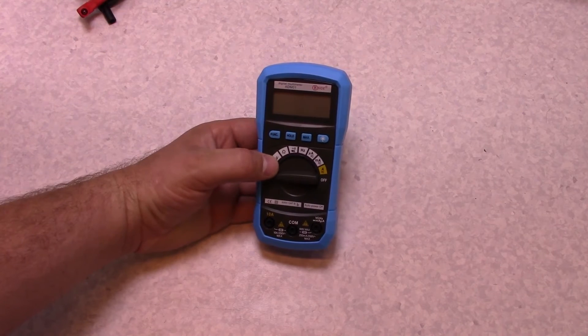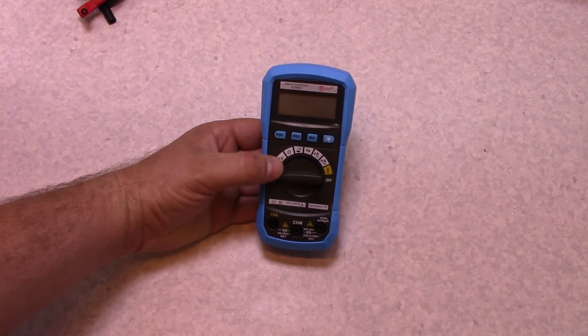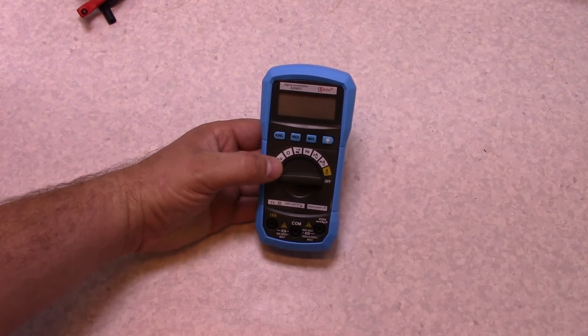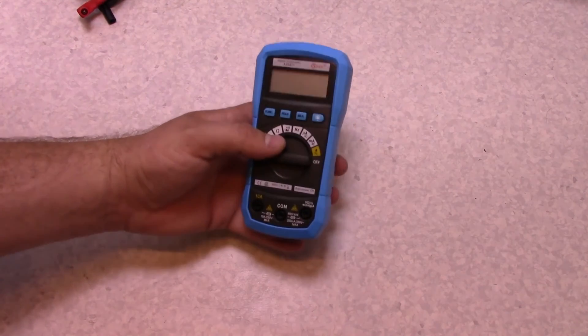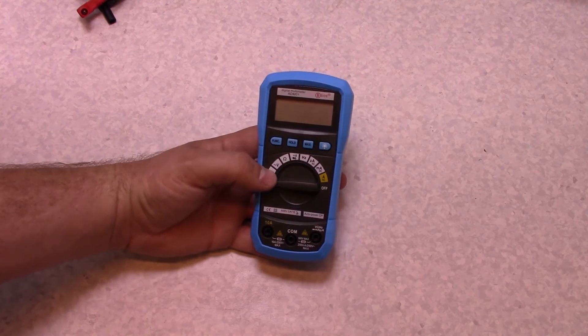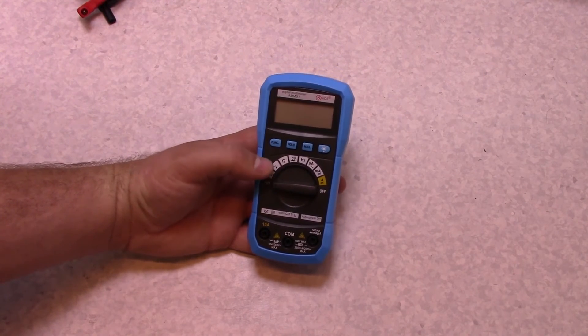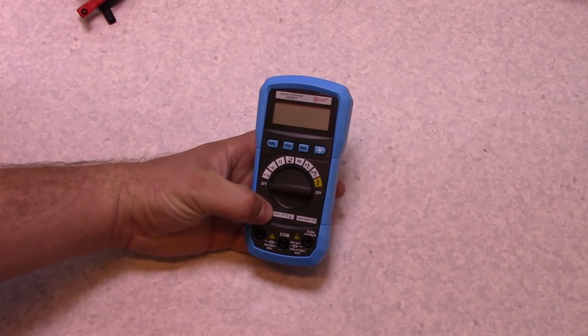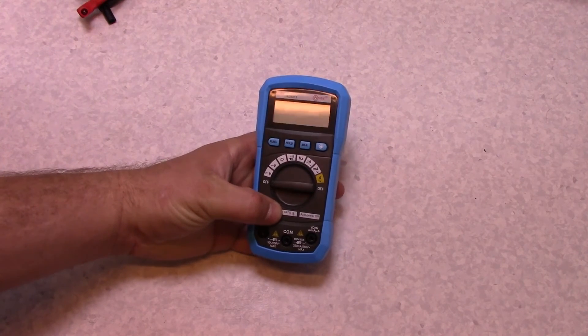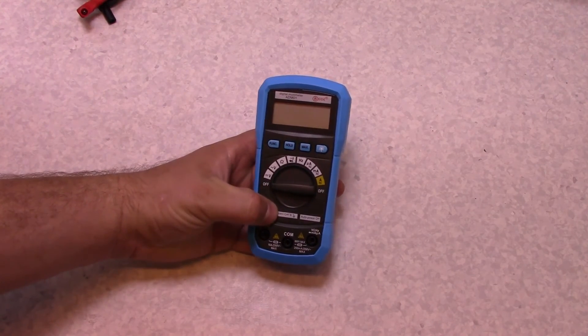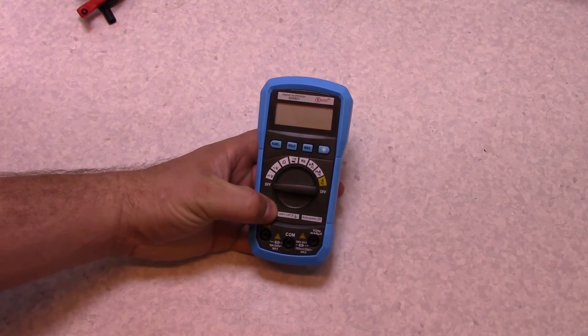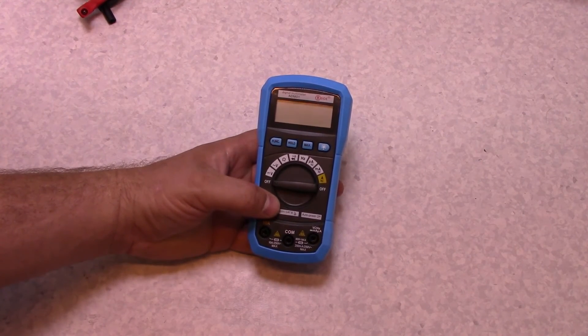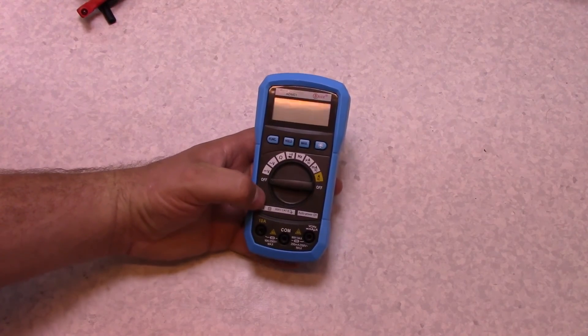I'm sure, as with all of these meters, I wouldn't trust my life on it. I would not take this to go stick in the main panel or anywhere. They are only claiming a Cat 2 rating at 600 volts. So, they're not trying to make the 600 volt Cat 3 rating.